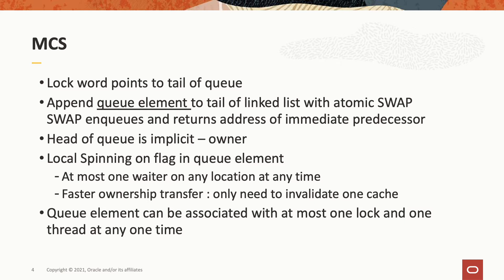In MCS, a lock consists of a single word. That word points to the tail of a queue, and the elements in the queue are queue elements. We use an atomic swap operation to append queue elements to the tail of a linked list. The swap operation returns the address of the immediate predecessor queue element. The head of the queue is implicit — that's the owner — and we use local spinning on a flag in the queue element. At most one thread busy waits on a given location at any one time. This allows faster transfer of ownership because when we perform the store that conveys ownership, we need to only invalidate one cache. Queue elements can be associated with at most one lock and one thread at any one time.